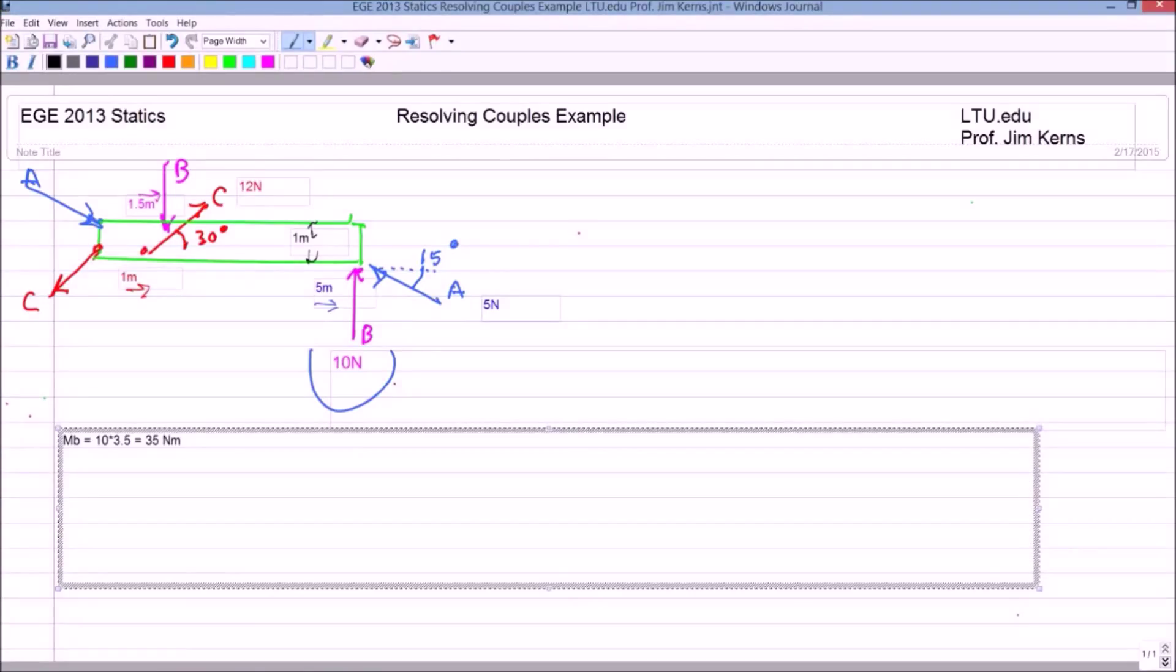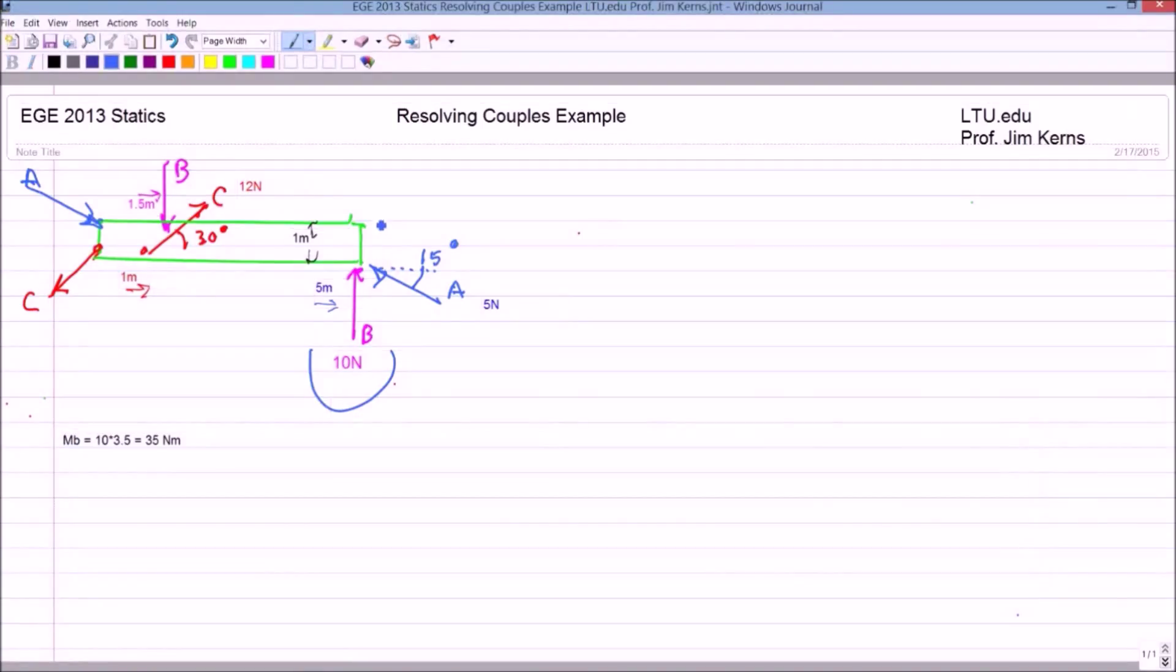We could use cosines and things to figure out what the distance is and work it out. But we'll use Cartesian notation. So I'm going to break it down into the X and Y components. So I'm going to have a Y component for A, and I'm going to have an X component for A on each end.